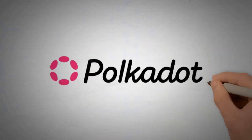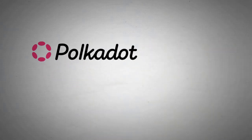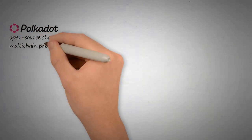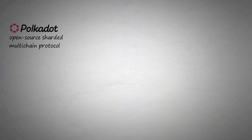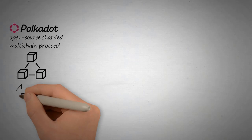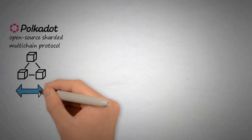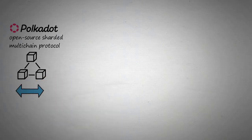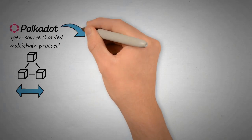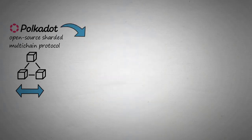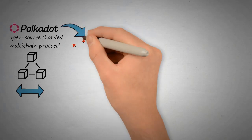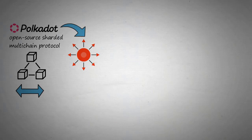What is Polkadot? Polkadot is an open-source sharded multi-chain protocol that connects and secures a network of specialized blockchains, facilitating cross-chain transfer of any data or asset types — not just tokens — thereby allowing blockchains to be interoperable with each other. Polkadot was designed to provide a foundation for a decentralized internet of blockchains, also known as Web3.